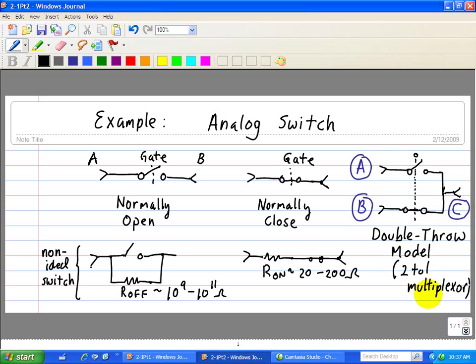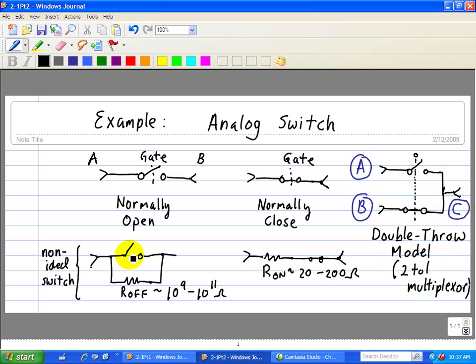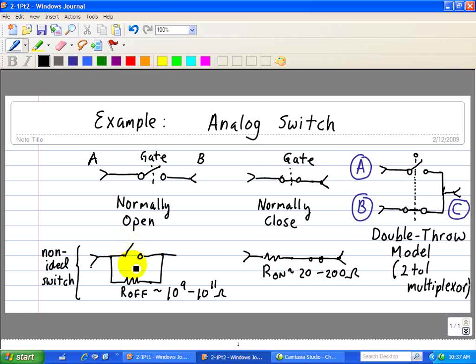Now, sometimes switches are not ideal for analog switches. So what we have here is a model for this analog switch in which we have a finite off resistance. And when it's off, we want to remember for an open switch, it's infinite.